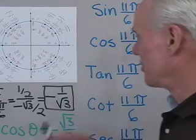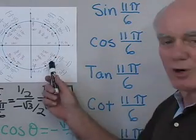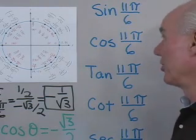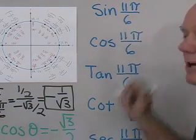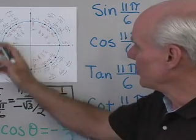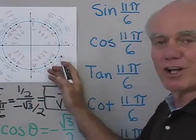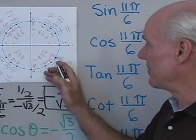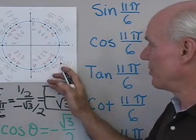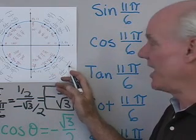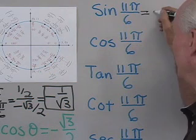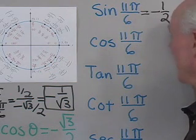Now let's try some other problems using the unit circle. I want to find the sine of 11π/6. Going around the unit circle to find the angle 11π/6, the coordinates at that point are √3/2 and −1/2. The first coordinate is cosine and the second is sine, so the sine of 11π/6 is −1/2.